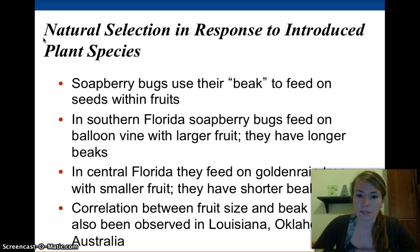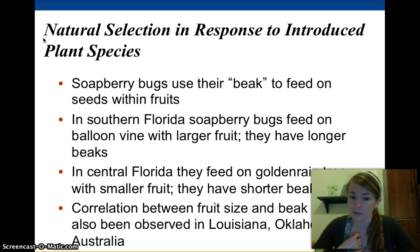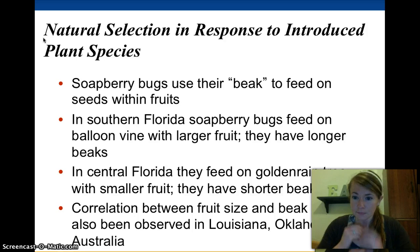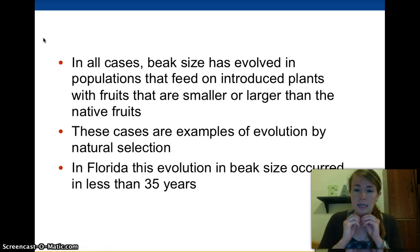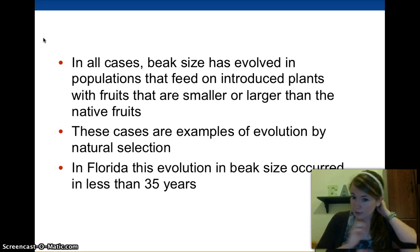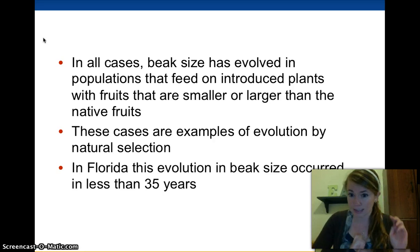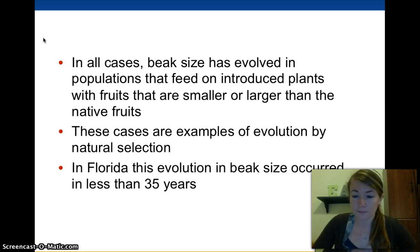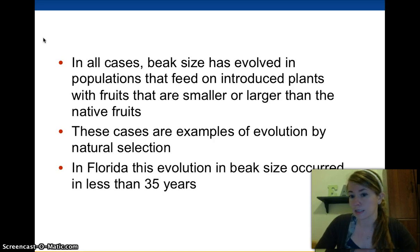They've seen this correlation between beak size and fruit size in a bunch of different locations. In all cases, they noticed that the beak size correlated perfectly — larger fruits have longer beaks, smaller fruits have smaller beaks.